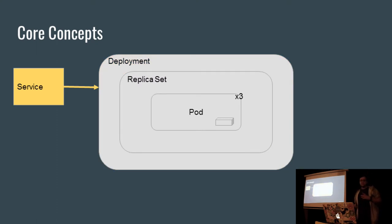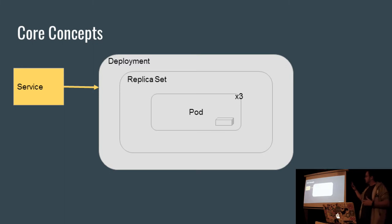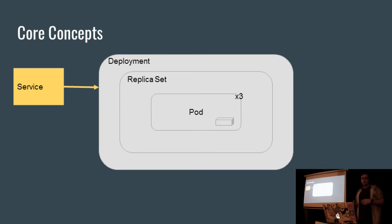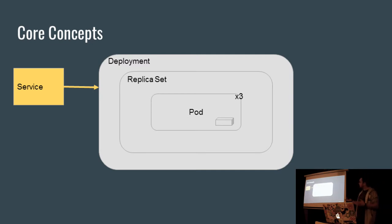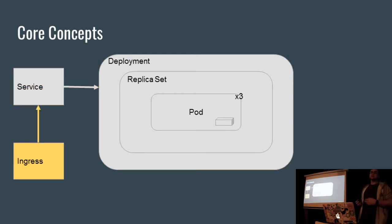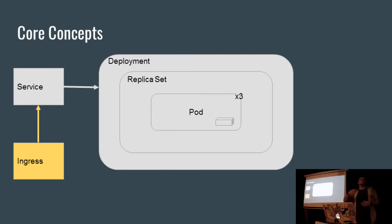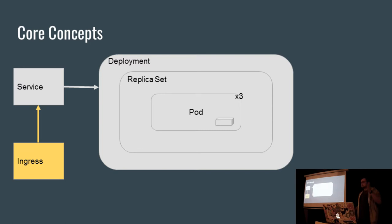We've also got services. A service is the way that you communicate with your application. You point a service at your pods, and it knows where all the pods are, how many pods there are, and how to get to those pods. A service will use DNS as its resolution, so you can find different applications by an internal DNS lookup. You can also have a thing called an ingress, which allows you to create an external hostname that can then point to a service, so you can host a web application or whatever.